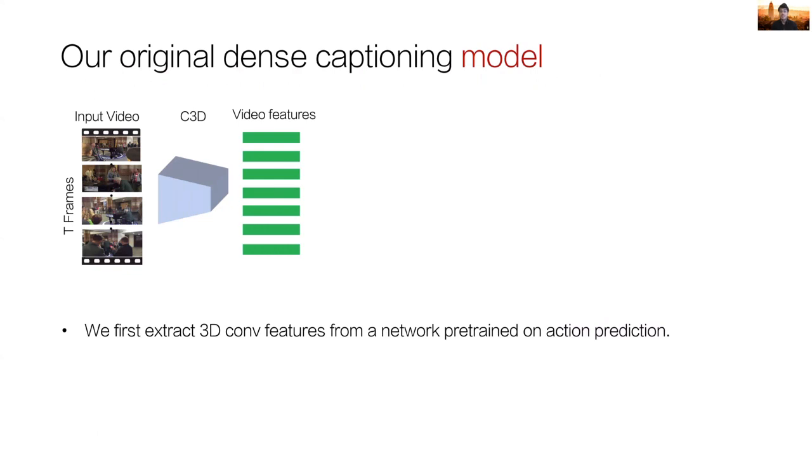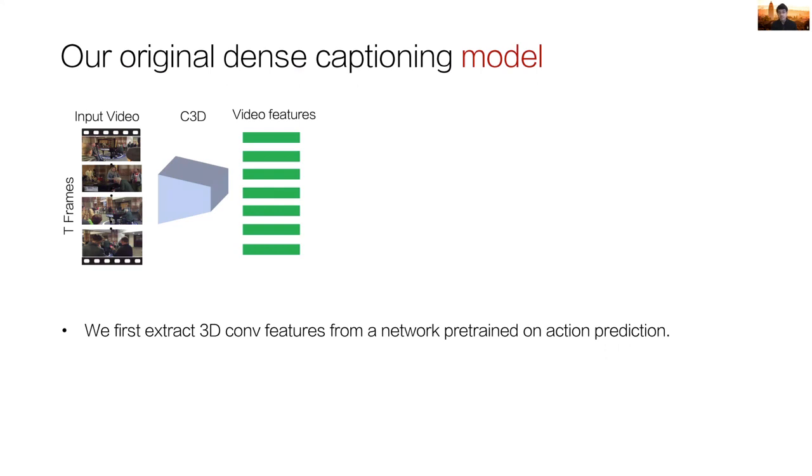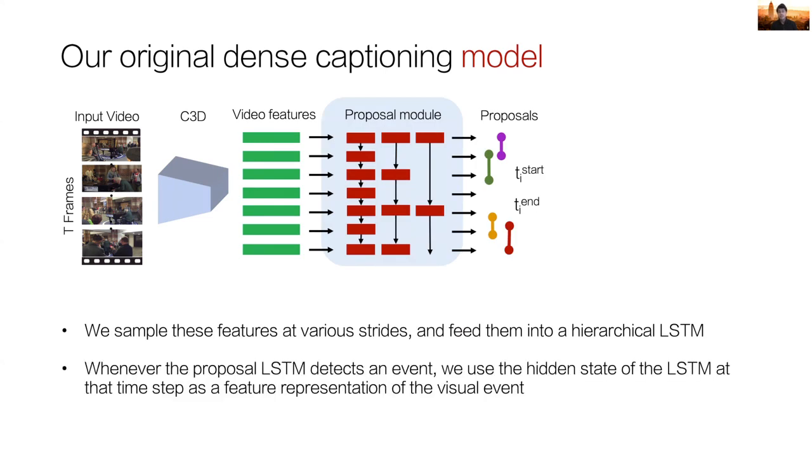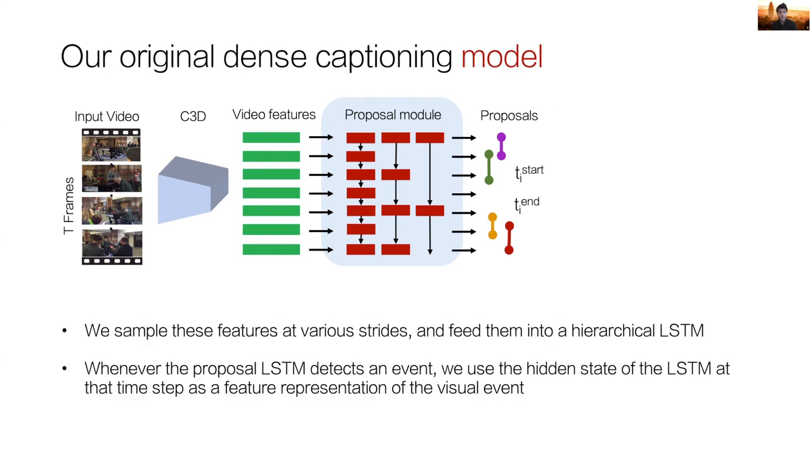With these in mind, we developed a model that tackled both of these challenges. The model starts out by first extracting 3D convolutional features from each of the frames. Next, it uses these features to find events. We developed a hierarchical proposal model that captures events both that are shorter as well as longer timescales. This tackles our first challenge of varying length events. We used an LSTM at different strides as hierarchies. The smaller strides found smaller events while the longer strides found the longer events.